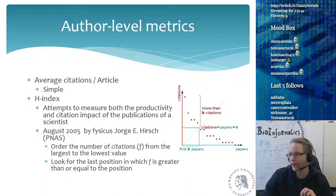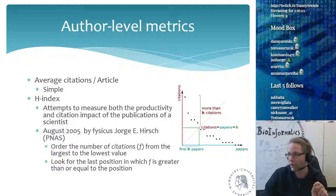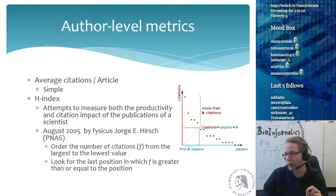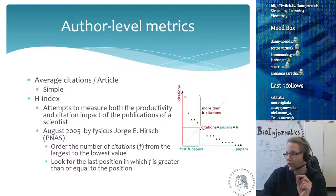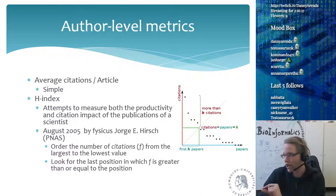The h-index is the point at which your citation count is higher than the number of papers published up to that rank. For example, if you have one paper with one citation your h-index is one. If you publish a second paper with zero citations, your h-index is still one. Even if your first paper gets a second citation — two on paper one, zero on paper two — your h-index is still one.